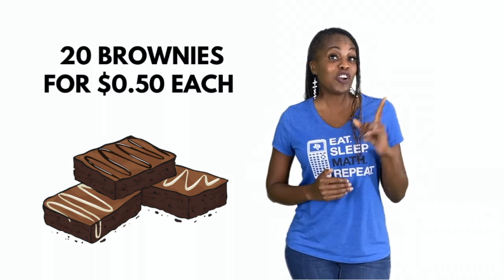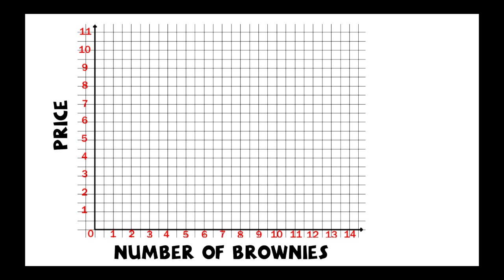Check this out. If we were to graph this relationship, you can see a couple of things. If we had one brownie, it would be 50 cents. On this graph, the number of brownies is 1, and when I go up and over to the left, I'll see that the price is 50 cents. We also know that if we were to buy 10 brownies, it's $5 — we found that in the prior video on rates. It makes sense; it's half the price.